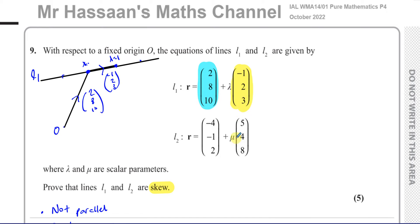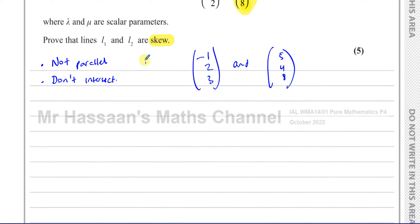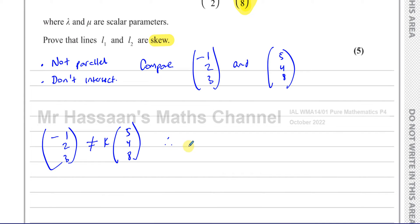We have to prove these two lines are not parallel. Comparing the direction vectors (−1, 2, 3) and (5, 4, 8), we can see they are not multiples of each other — you cannot express one as a constant multiple of the other. Therefore, line 1 and line 2 are not parallel. That's the first thing we've proved.